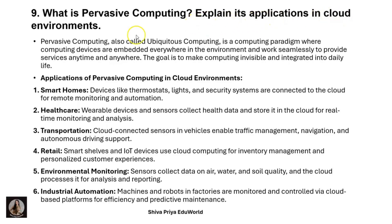The next question is: what is pervasive computing? Explain its applications in cloud environments. Pervasive computing, also called ubiquitous computing, is a computing paradigm where computing devices are embedded everywhere in the environment to provide services anytime and anywhere. The goal is to make computing invisible and integrated into daily life. Applications include smart homes, healthcare, transportation, retail, environmental monitoring, and industrial automation. In smart homes, devices like thermostats, lights, and security systems are connected to the cloud for remote monitoring and automation.